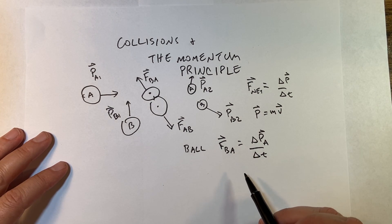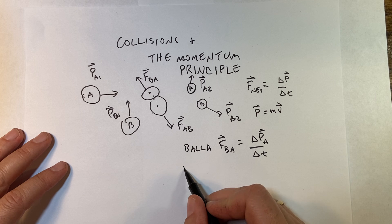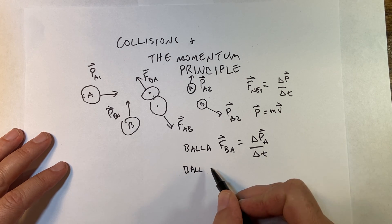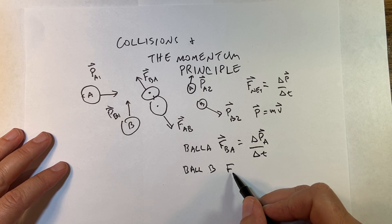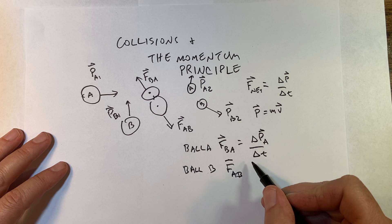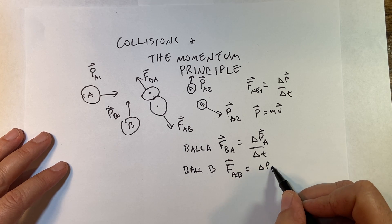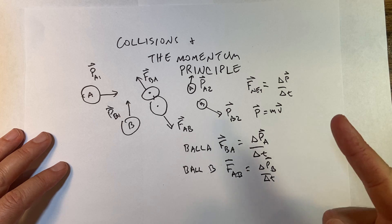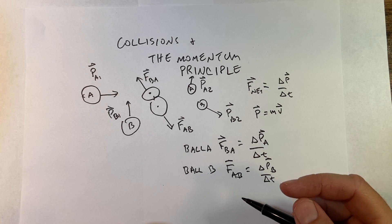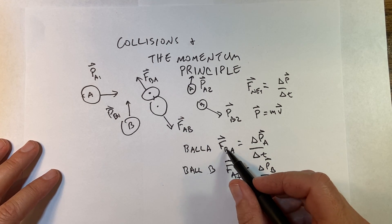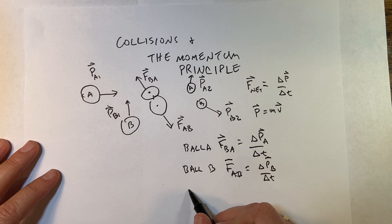And the interaction lasts for some time. Ball A, ball B, I can do the same thing. F_AB equals delta p_B over delta t. But these are opposite of each other. F_BA equals negative F_AB.